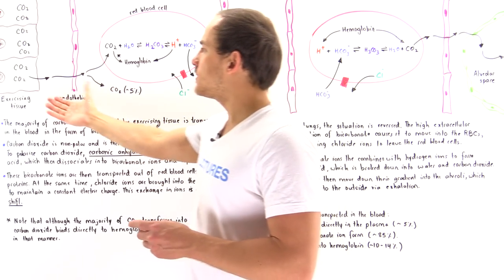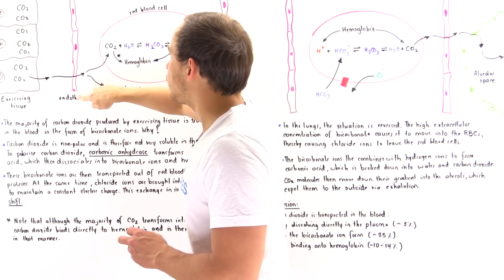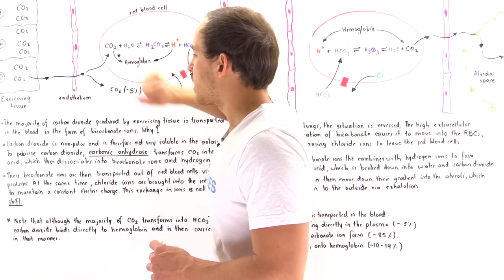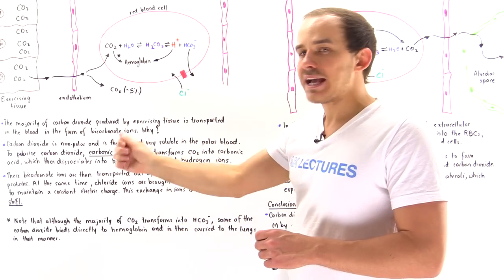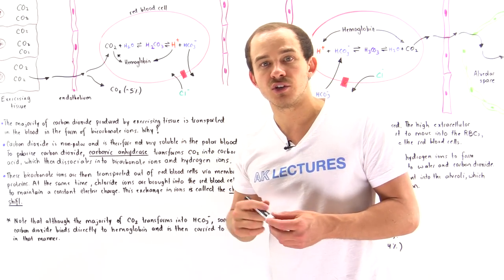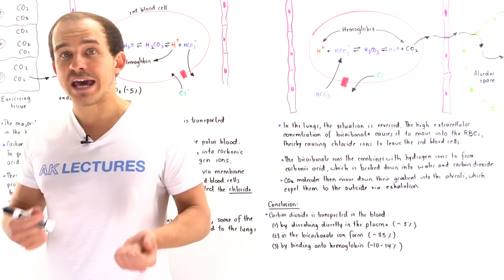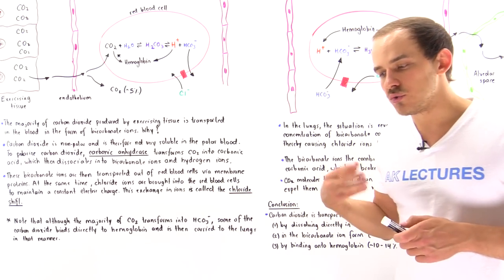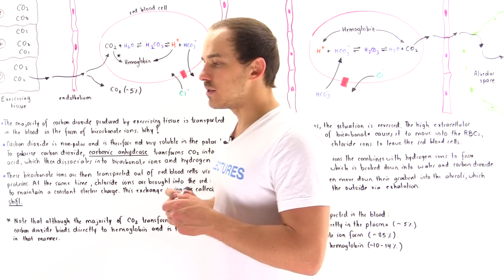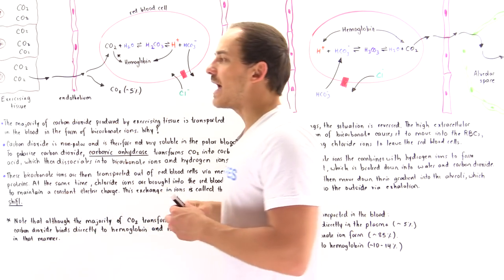Let's begin by focusing on a diagram showing the cells of the exercising tissue, the endothelium of the blood capillary, the blood plasma, and the red blood cell. As the arm moves, muscle cells produce ATP molecules through aerobic cellular respiration, which uses up oxygen and produces carbon dioxide and ATP. The ATP molecules are used as energy, and the carbon dioxide, because it cannot be used in any useful way, must be released by the exercising tissue cells.